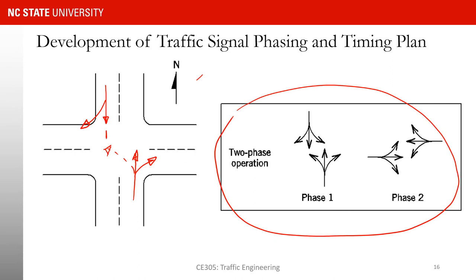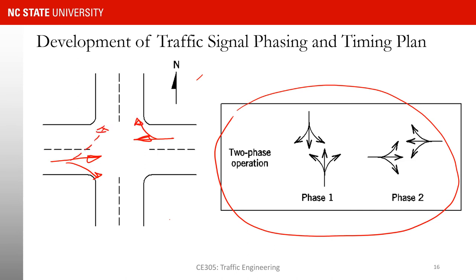In phase two, eastbound and westbound movements see green — through traffic can go, right turns can go, while left turners need to yield to opposing traffic and then go. These two phases repeat in each cycle and keep repeating.